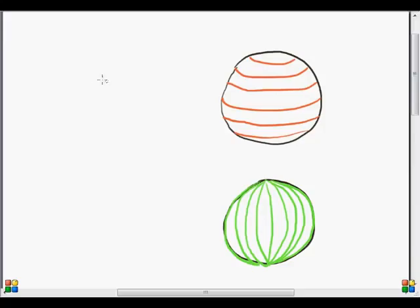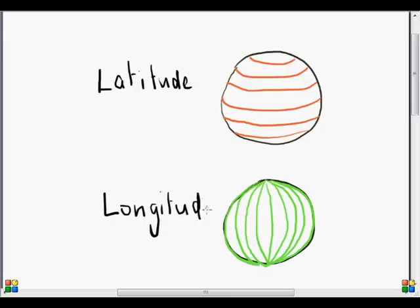If we then look at the two systems together, and by the two systems I mean latitude and longitude, we now have a system whereby we can identify where places are. The diagrams of course show lines of latitude and longitude. Remember that latitude is distance from the equator, north or south of the equator, and longitude is distance from Greenwich east or west of Greenwich.